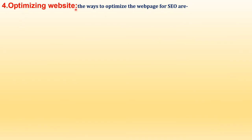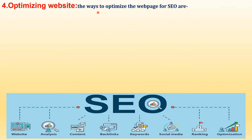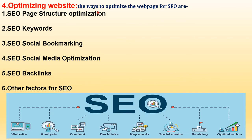The ways to optimize a webpage for SEO include: SEO page structure optimization, SEO keywords, SEO social bookmarking, SEO social media optimization, SEO backlinks, and other factors for SEO. Both on-page and off-page SEO elements are found here.